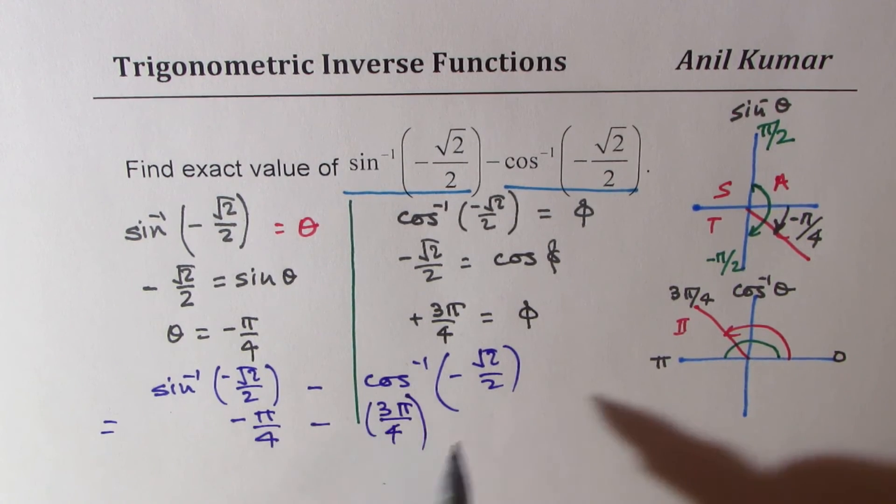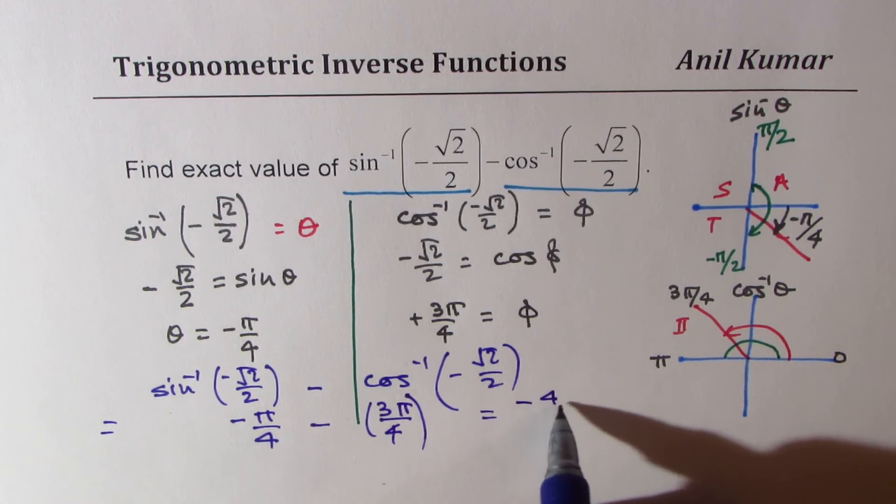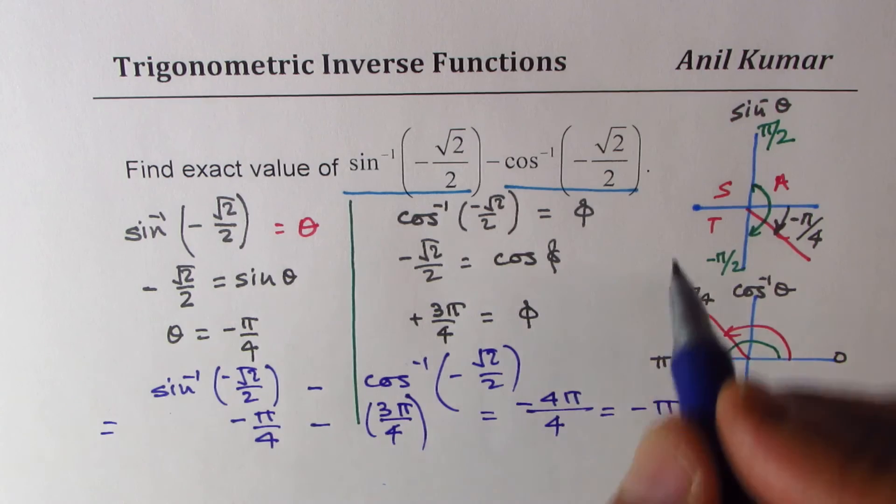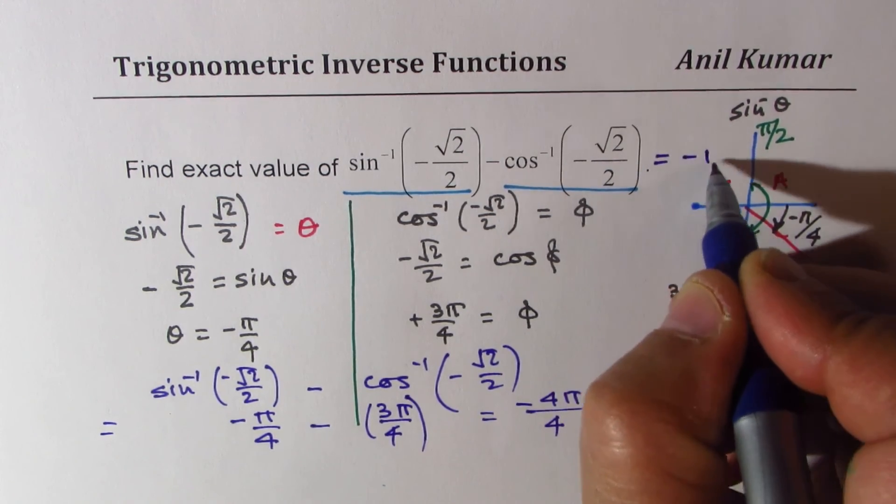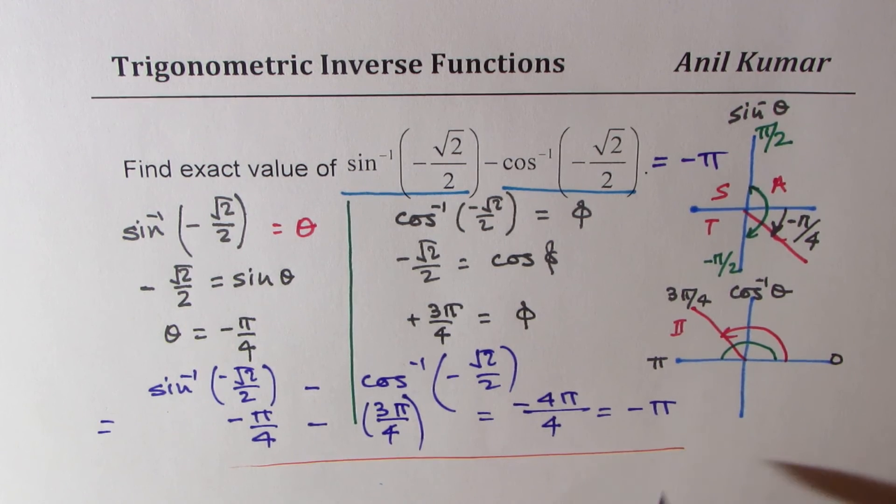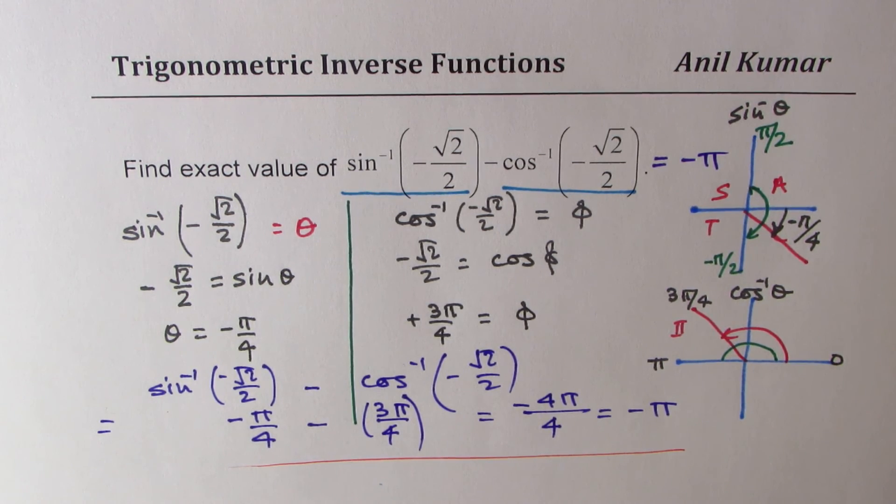Now when you combine these two, you get minus 4 pi by 4, which equals to minus pi. So the exact value for this is minus pi. So that is how you can solve this particular expression. The important thing which you have to remember is when is the inverse of trigonometric function valid? Keeping that in mind helps you to get the correct answer. I hope that helps.